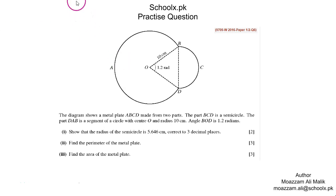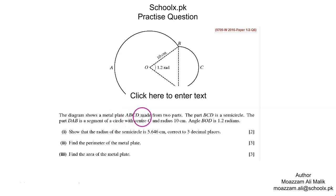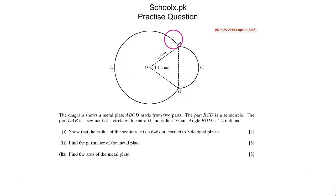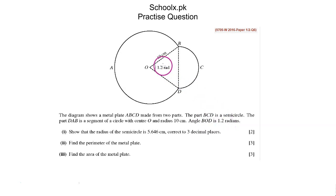In this question, the diagram shows a metal part ABCD made from two parts. Part BCD is a semicircle, and part DAB is a segment of a circle with center O and radius 10 cm. Angle BOD is 1.2 radians, so the remaining angle will be 2π minus 1.2 radians, because 2π radians is one complete revolution.